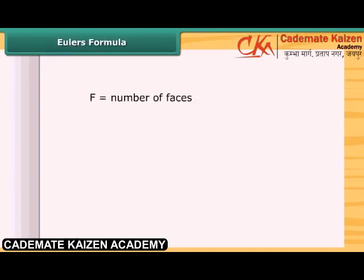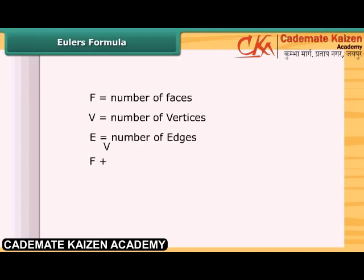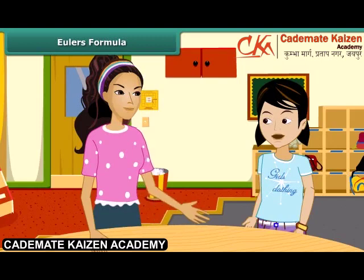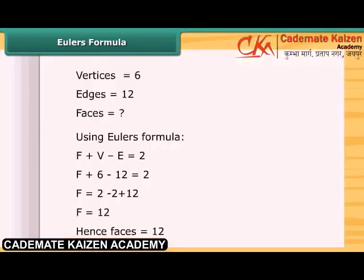If F stands for number of faces, V stands for number of vertices, and E stands for number of edges, then Euler's formula is: F plus V equals E plus 2, that is, F plus V minus E equals 2. This formula is true for any polyhedron. If the number of vertices and number of edges of a polyhedron are given, we can find the number of faces using Euler's formula. Similarly, if any two values are given, we can find the third value using Euler's formula.